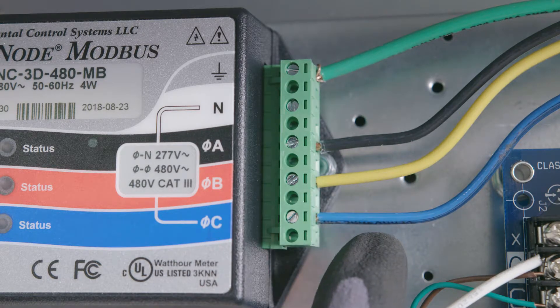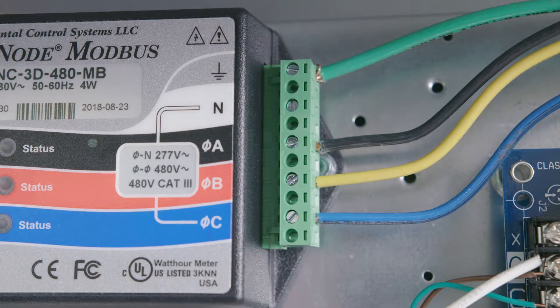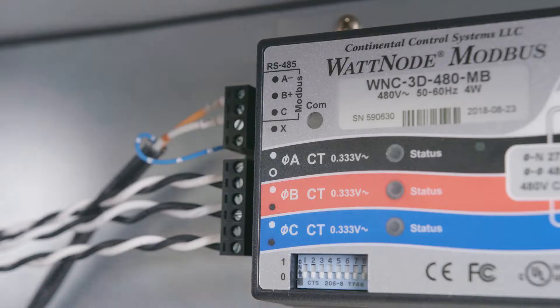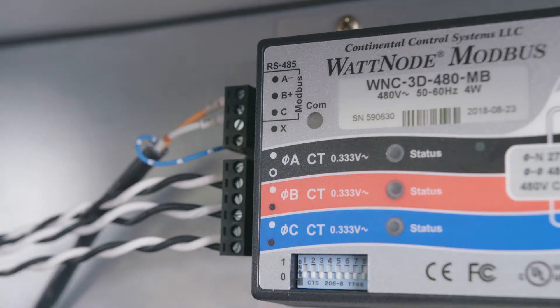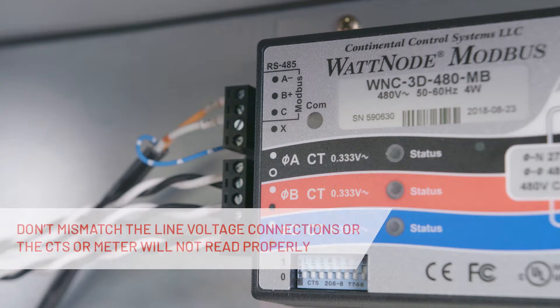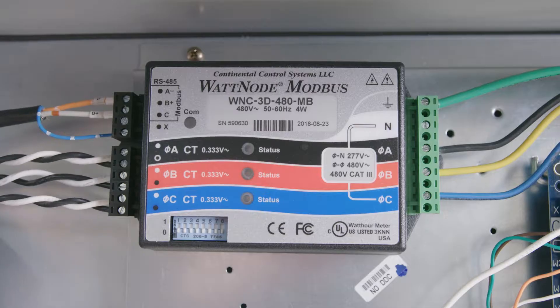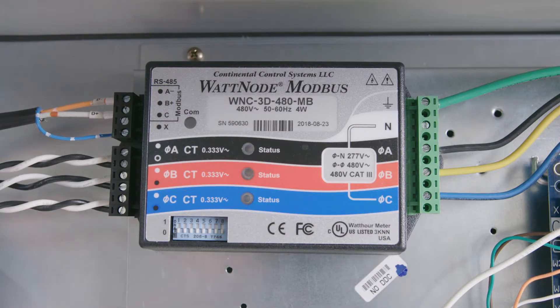On the right-hand side, you have terminals for the A, B, and C phases of power, which need to be connected to the line voltage. On the left-hand side, you have terminals for A, B, and C phases, which need to be connected to the CTs. Please note that the line voltage connected to line A must have the CT connected to that same line voltage. You can't mismatch the line voltage connections and the CTs, or the meter will not read properly. The phases have to be correlated to A phase, B phase, and C phase.